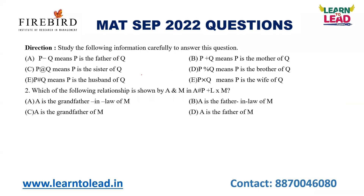Now let's look at the next step — blood relation questions. There are three types: coding-based relationships, puzzle type, and coded relationships. For coded relationships, symbols like slash, plus, and cross denote husband, mother, and wife respectively. For example: A slash P means A is the husband of P, so P is female. Plus denotes mother, cross denotes wife. Drawing a family diagram makes it easy to determine relationships.